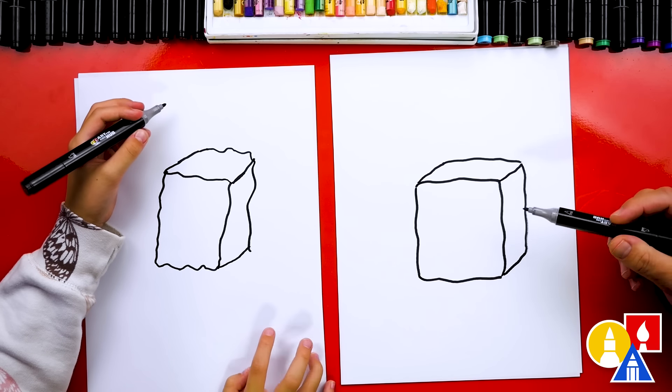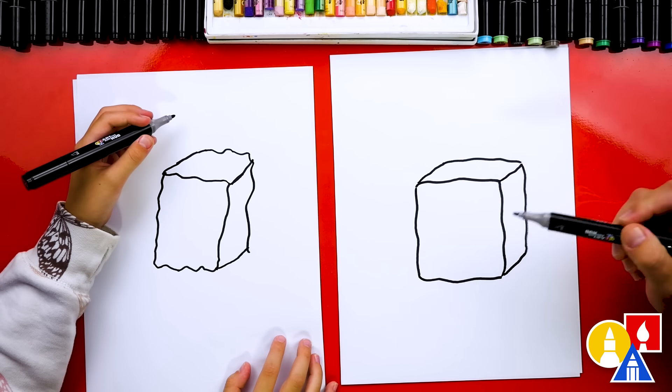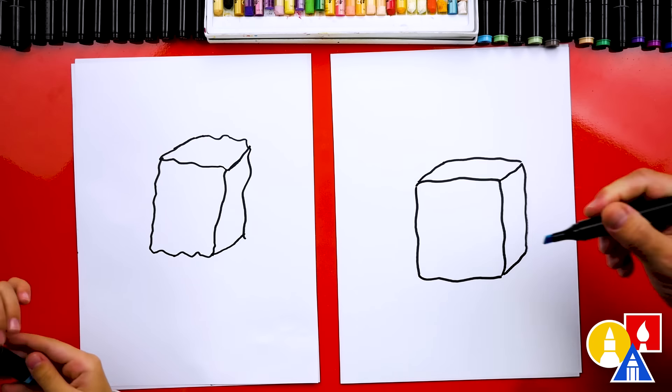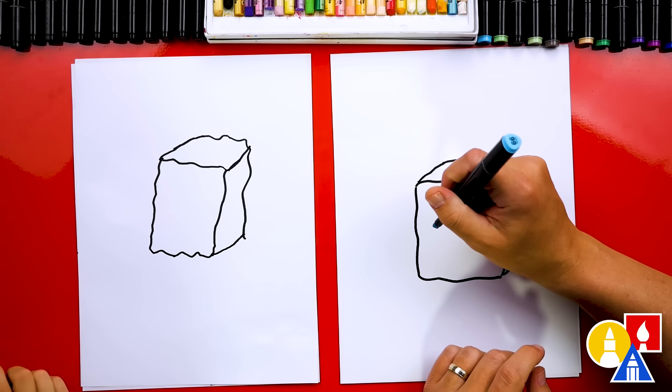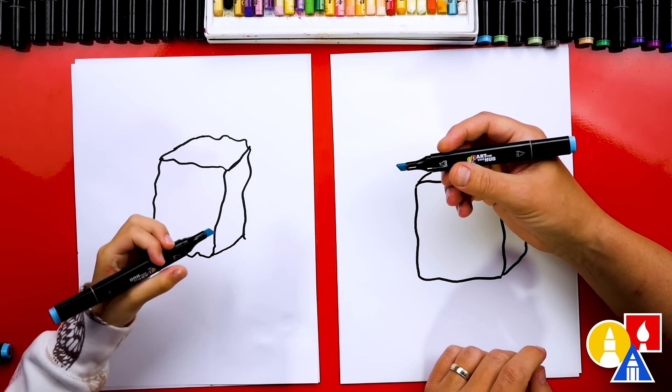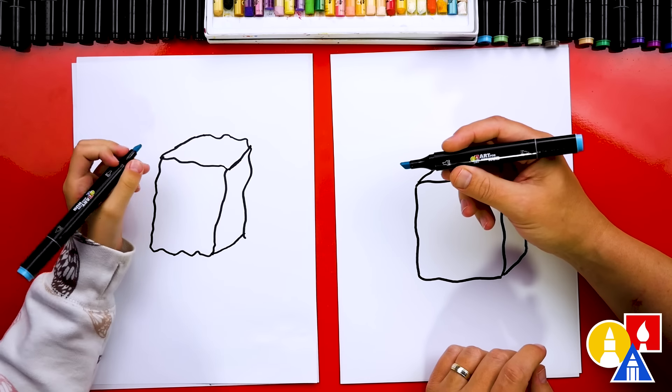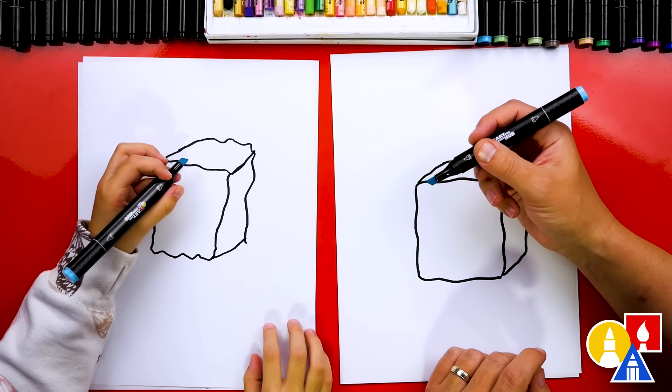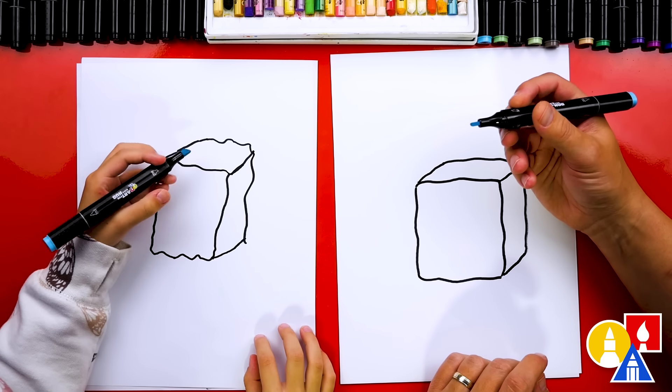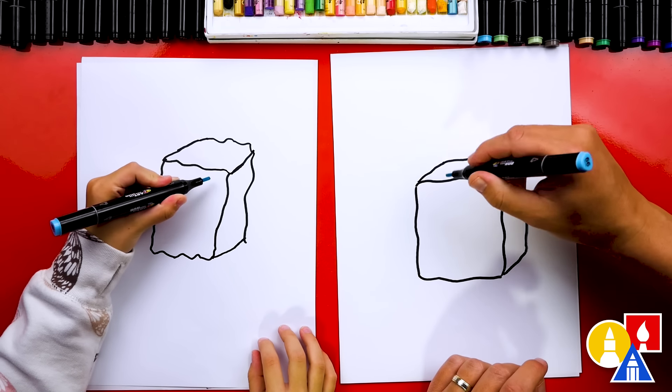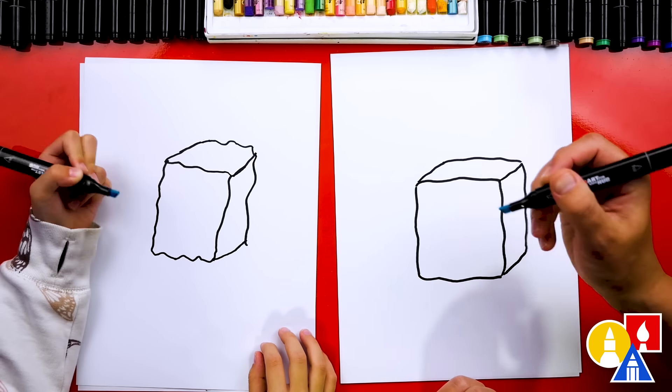Well, let's color it and then we're going to make it funny by adding a funny face. We're just using one color. It's our 66 light blue. If you're using our same art for kids hub markers, but you don't have to, you could use whatever you have at home or in the classroom, like colored pencils or even crayons.